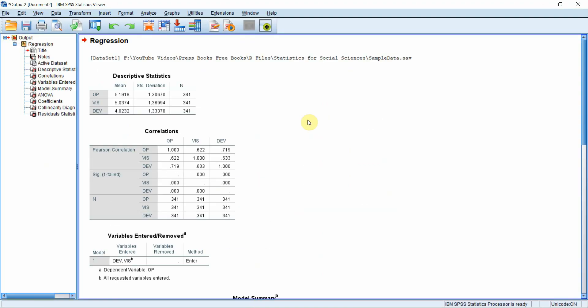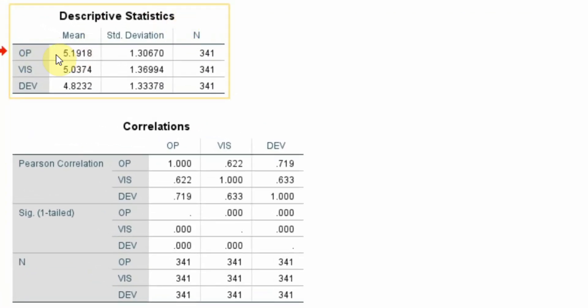Now here are our results. If you look here this is the descriptive statistics. The mean value for OP, vision and development. It seems all right, there is no issue.